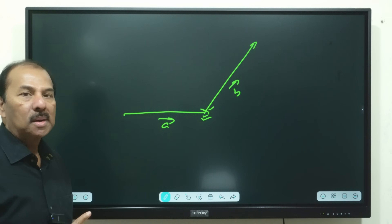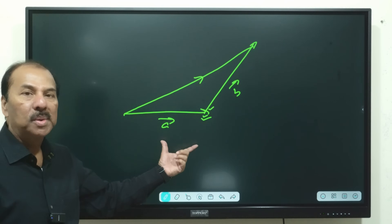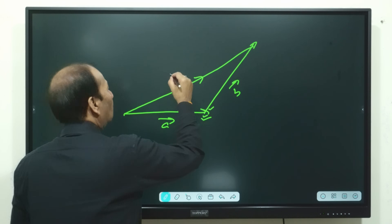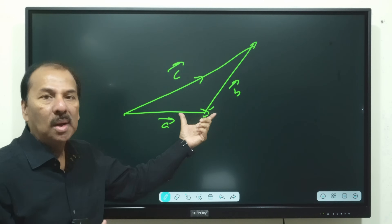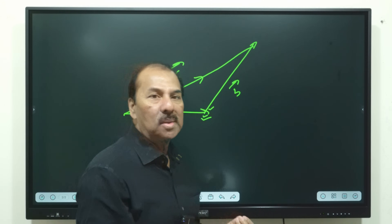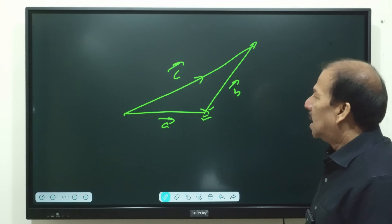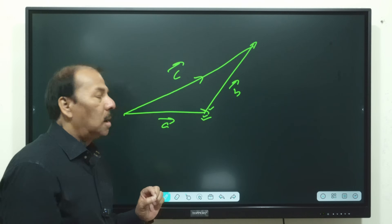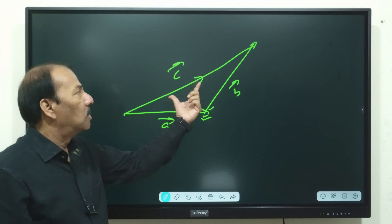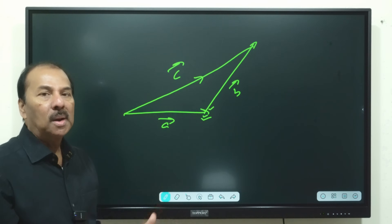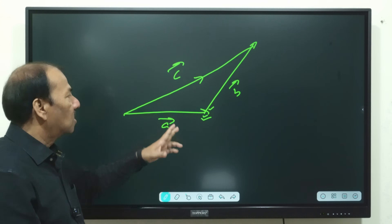Join the tail of the first vector with the head of the second vector — that line gives us the resultant, let us call it vector C. So one condition is the angle measured anti-clockwise with respect to positive x-axis, and another is head of first joined with tail of second, then the line from tail of first to head of second gives you the resultant.